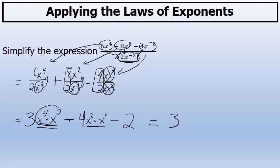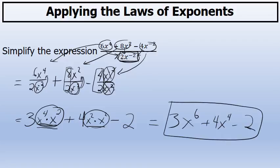In the first term, x to the fourth times x to the second, when I multiply the same base, I add the exponents. And the same thing happens in the second term. It's the same base, so I will add the exponents. 2 plus 2 is 4. The final answer is 3x to the sixth power plus 4x to the fourth minus 2.